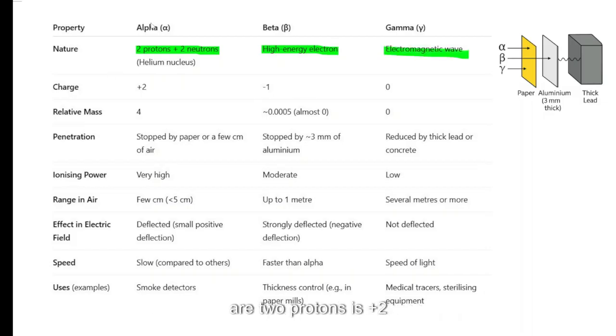Charge of an alpha particle, because there are two protons, is plus two. Beta, minus one. Gamma, no charge.